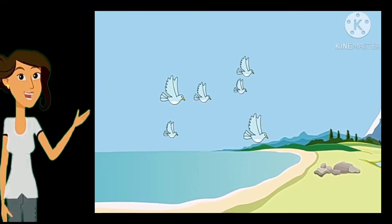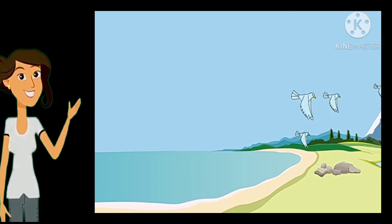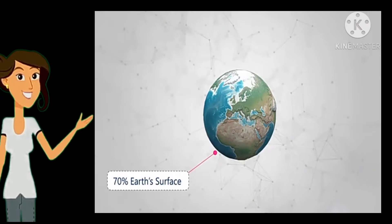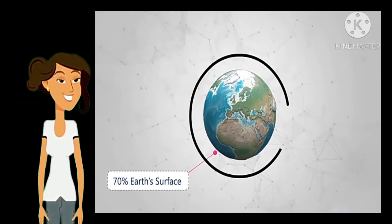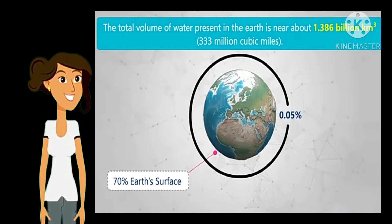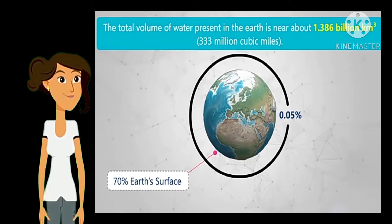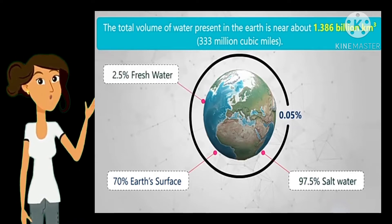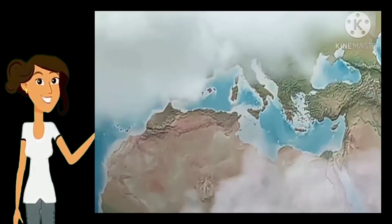Do you know where we get water to fill this? Our Earth's two-thirds surface is covered with water. Water represents 70% of Earth's surface, but it is actually 0.05% of Earth's mass. The total volume of water present on Earth is approximately 1.386 billion km³, or 333 million cubic miles. Our Earth has 97.5% salt water, while only 2.5% is fresh water.